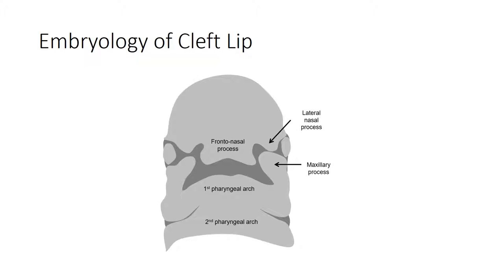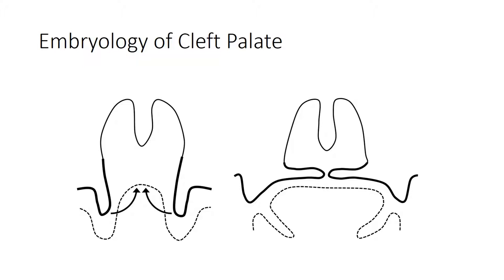Here is a frontal diagram of the cephalic portion of an embryo at four weeks of gestation, just before fusion of the maxillary process of the first pharyngeal arch and the frontal nasal process. Failure of fusion here results in a cleft lip. The closure of the secondary palate occurs due to elevation of the palatal shelves at around six to eight weeks of gestation. The tongue can get in the way of elevation and closure of the palatal shelves, and in some causes of cleft palate this is thought to be the mechanism.